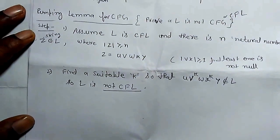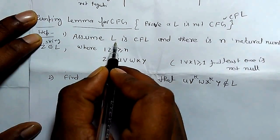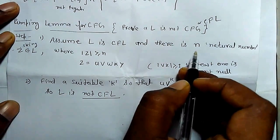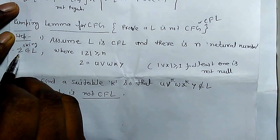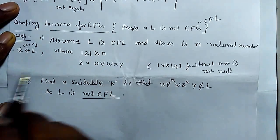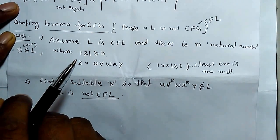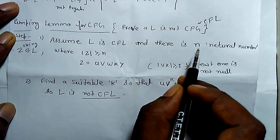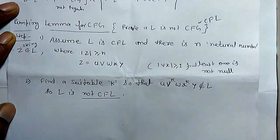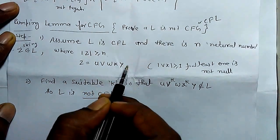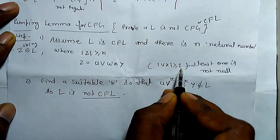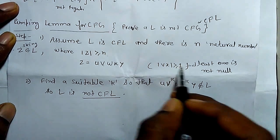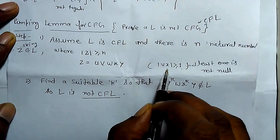The steps for proving a particular language is not context-free are: first, assume that the language is a context-free language. Take a string z that belongs to the context-free language L where |z| ≥ n. We decompose z = uvwxy into five parts, where |vx| ≥ 1, meaning at least one of v or x is not null — neither v nor x should be empty.